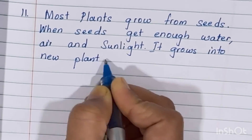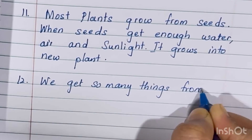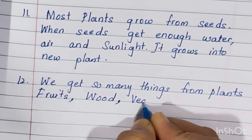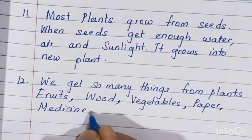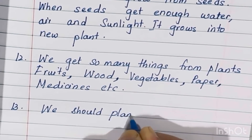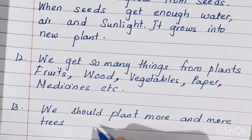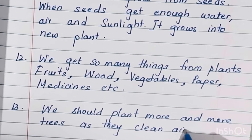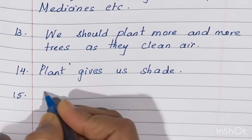We get so many things from plants: fruits, wood, vegetables, paper, medicines, etc. We should plant more and more trees as they clean the air. Plants also give us shade.